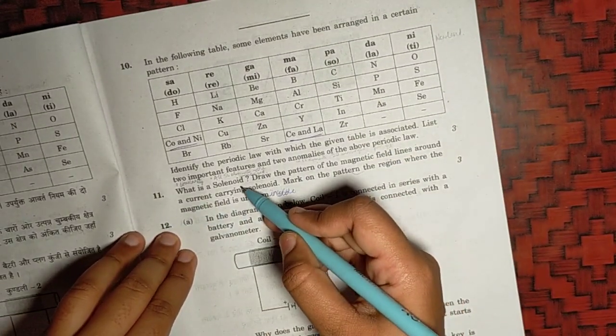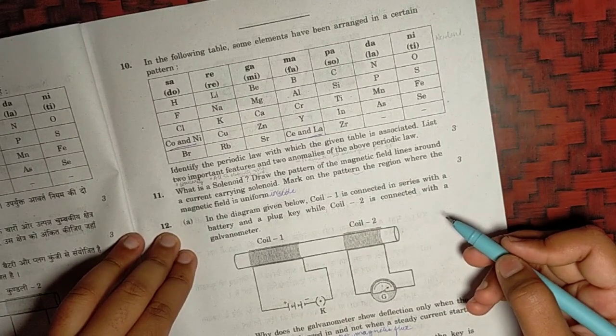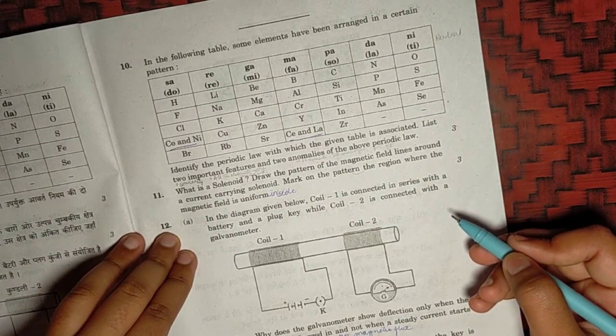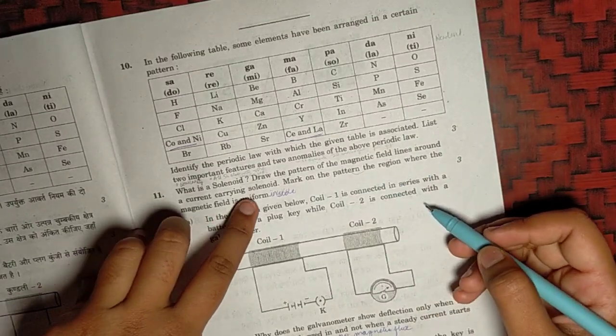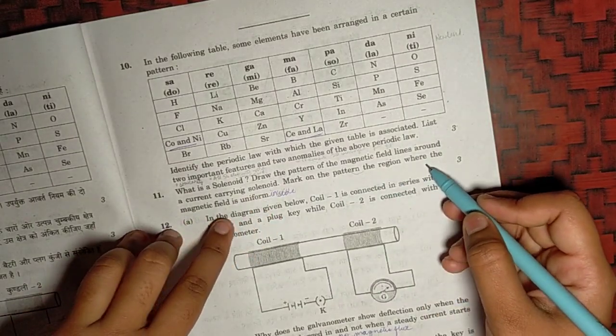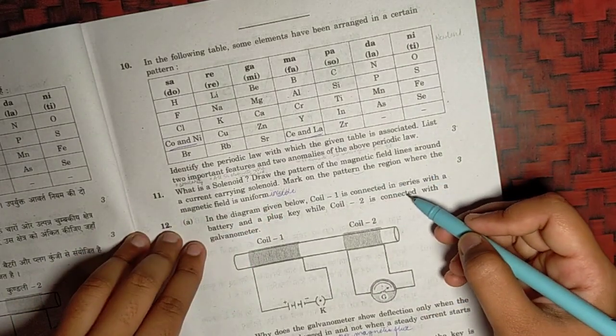For the eleventh one, solenoid is a coil of many circular turns of copper wire in the form of a cylinder. You need to draw the diagram of solenoid given in the NCERT. And the region where the magnetic field is uniform is inside the solenoid.